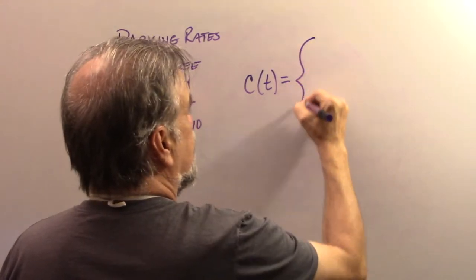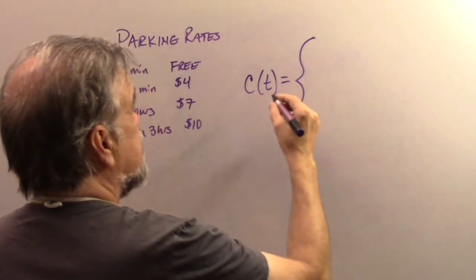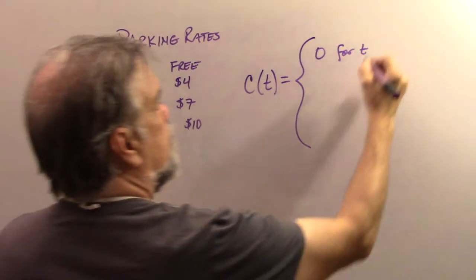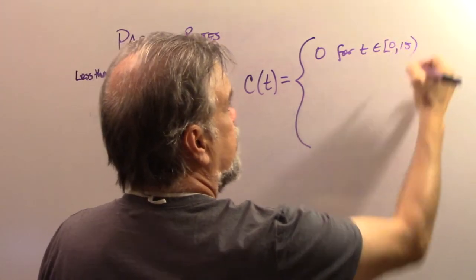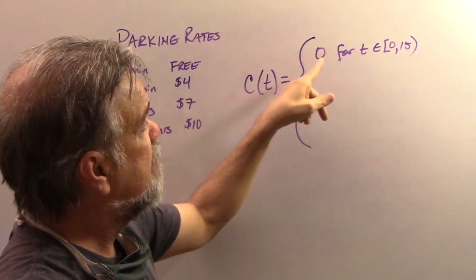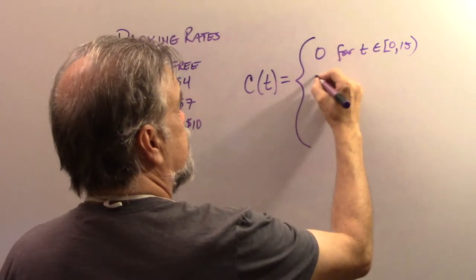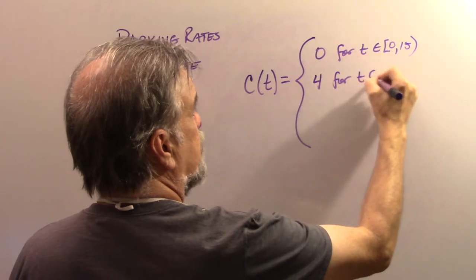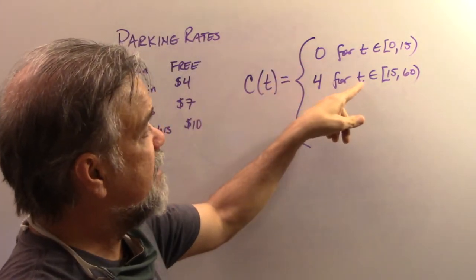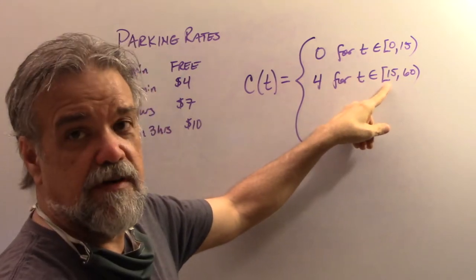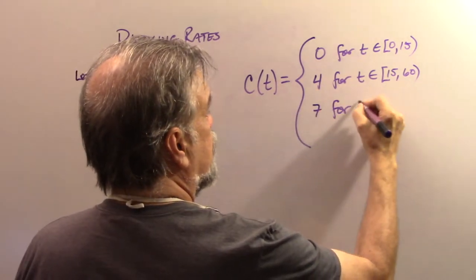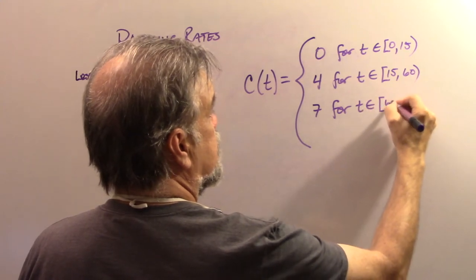I write a set bracket and I'm going to say C of T is zero for T between zero and 15. So as long as T is between zero and 15, C of T is going to be zero. Then C of T is going to be four for T between 15 and 60. Now what is that saying? It's saying if T is in that interval there, anything between 15 and 60, then the C of T is going to be four.